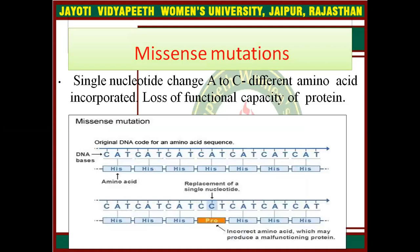Mis-sense mutation: a single nucleotide change such as A to C results in a different amino acid being incorporated, leading to loss of functional capacity of the protein. For example, A is replaced by C — a single nucleotide replacement. The original codon CAT encoded histidine, but now CCT produces a different amino acid, completely changing the protein structure because one amino acid is different in the final protein product.